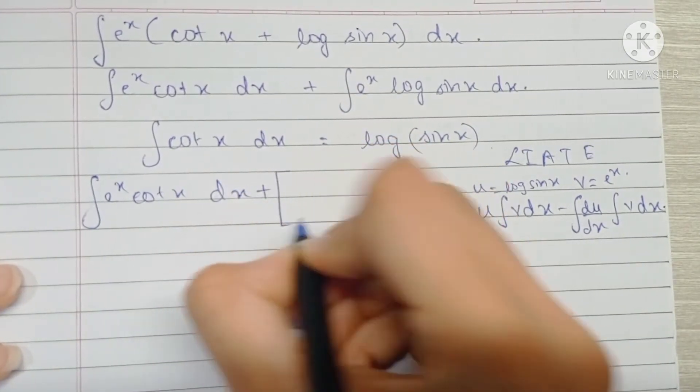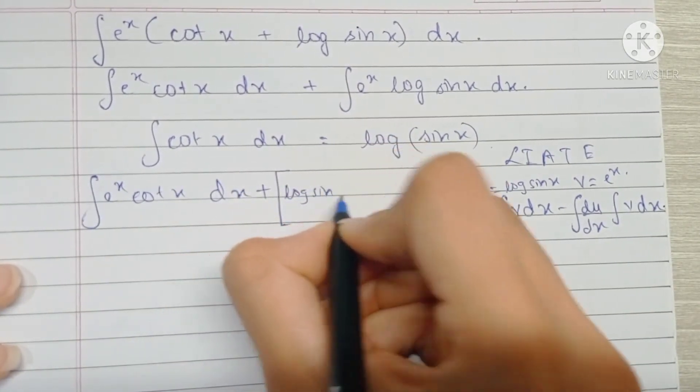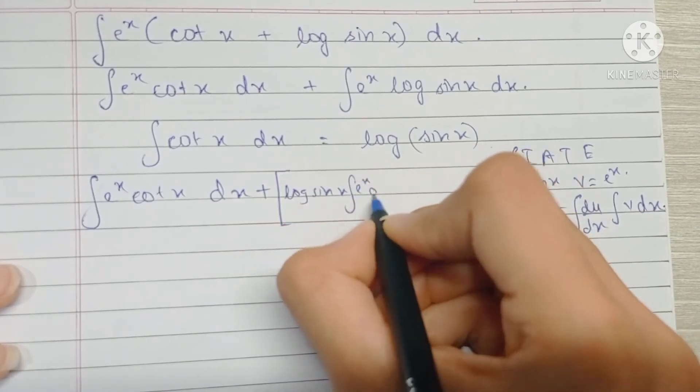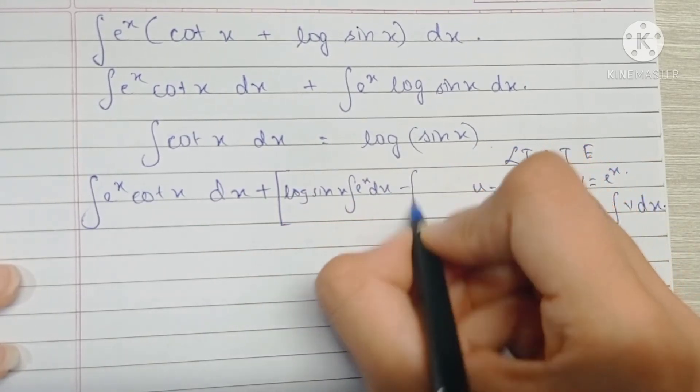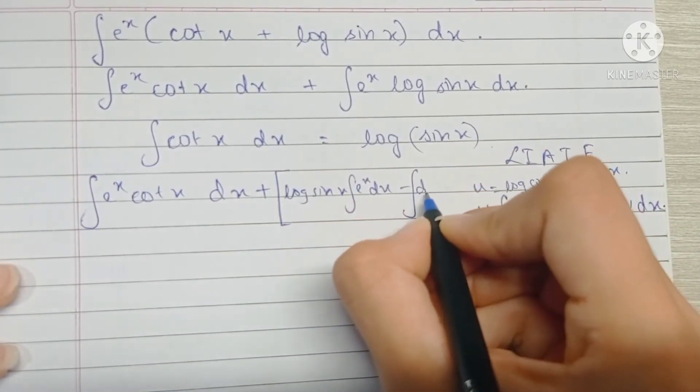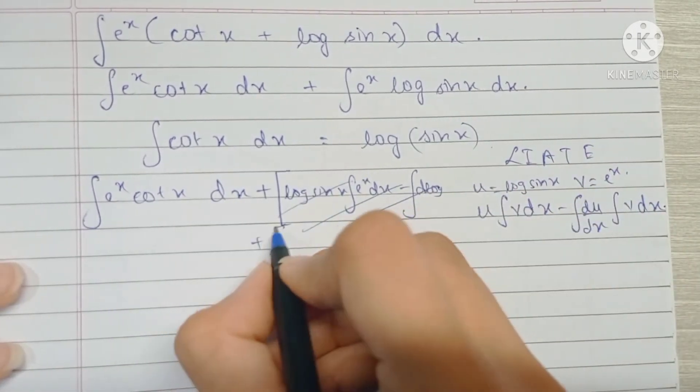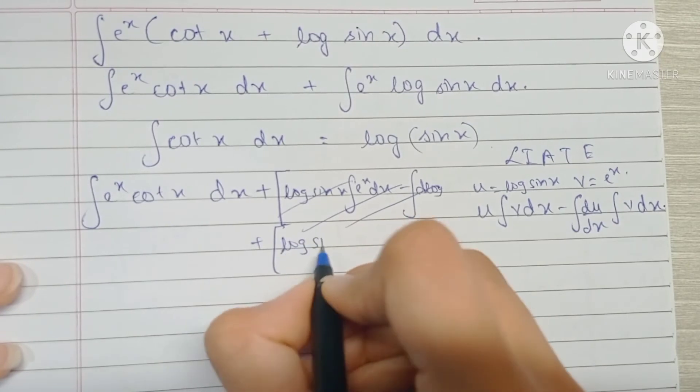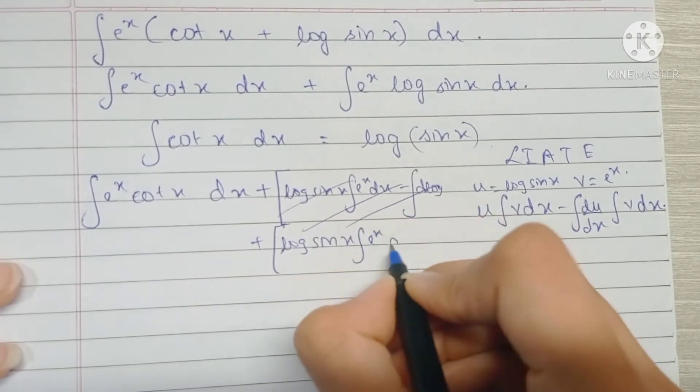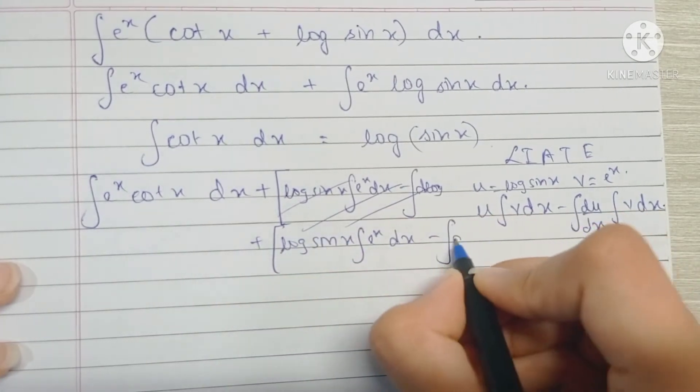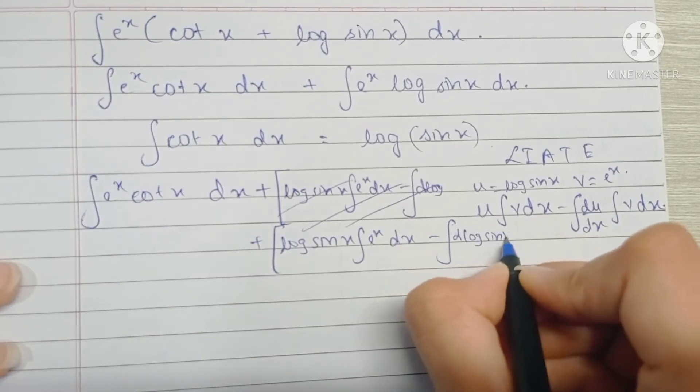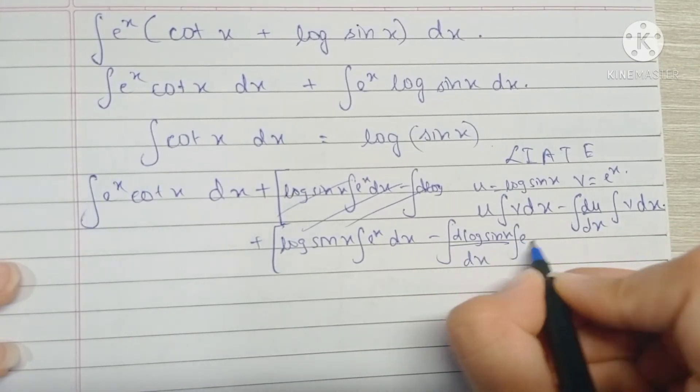So let's solve it by parts. We have log sin x into the integral of e raised to x minus the integral of differentiation of log sin x. I should just write this on the second line. So we have log sin x integral of e raised to x minus the integral of differentiation of log sin x integral of e raised to x.